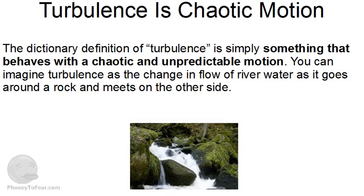When we experience turbulence on a plane, the plane is moving through air that has the same qualities as the churning river water. Turbulence happens at the borders of air masses that are moving in different directions. The same patterns of swirling eddies happen to the air at the edges of the air masses as they push past each other. Although the underlying mechanism that generates turbulence is always the same, there are different classifications of turbulence according to how it's created.